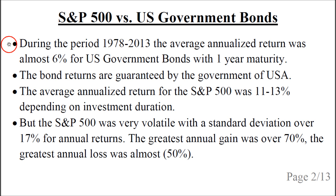During the period 1978 to 2013, the average annualized return was almost 6% for US government bonds with one year maturity. The bond returns are guaranteed by the government of the United States. Compare this to the average annualized return for the S&P 500, which was 11 to 13% depending on the investment duration between 1 and 10 years.